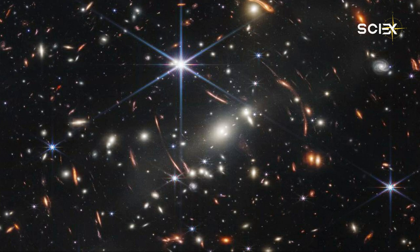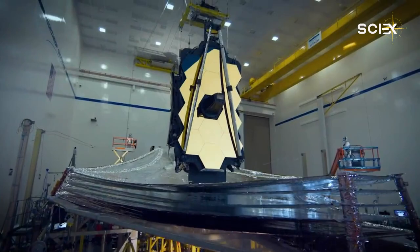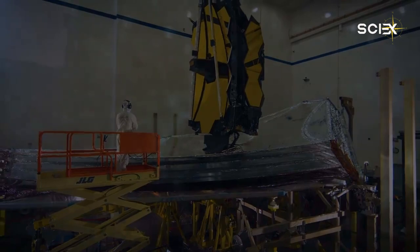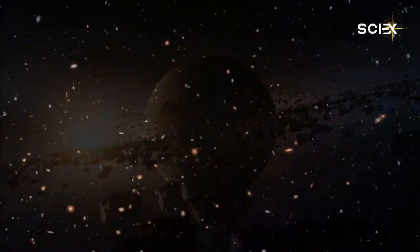The image shows SMACS-723, where a massive group of galaxy clusters act as a magnifying glass for the objects behind them, called gravitational lensing. This created Webb's first deep field view of incredibly old and distant, faint galaxies.